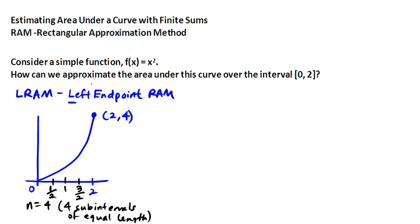So now what I do is I take the left endpoint of each subinterval, and I'm going to make a rectangle out of that subinterval with the left endpoint determining the height. So the left endpoint at 0 is just at 0, 0. So I basically have a rectangle with a height of 0.